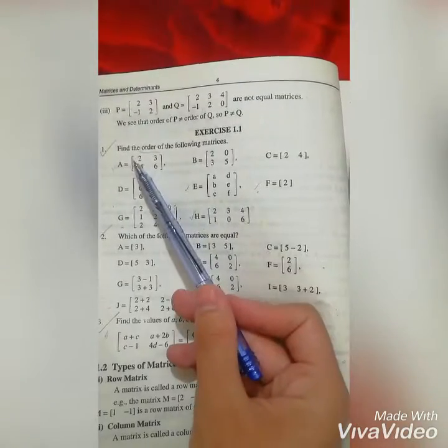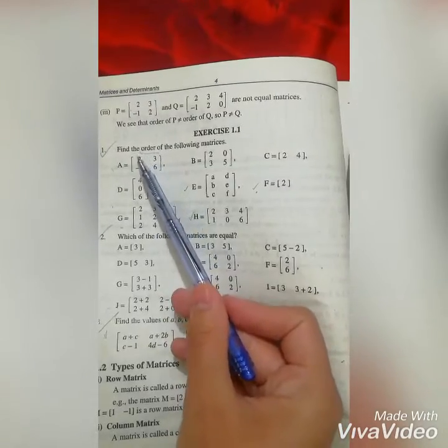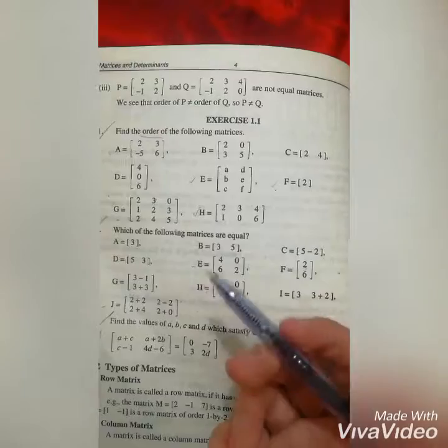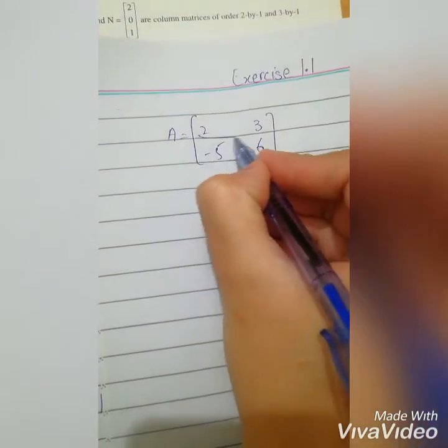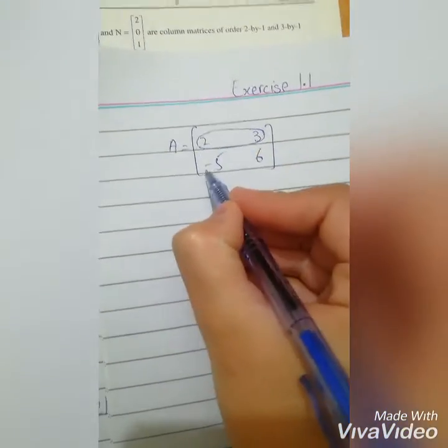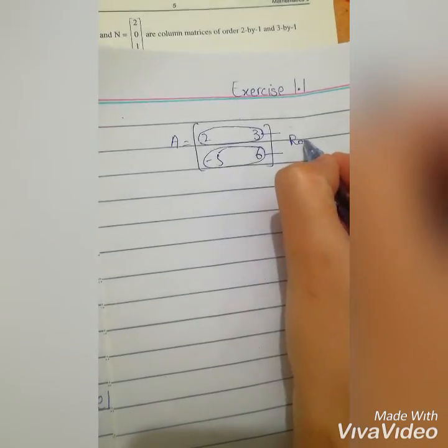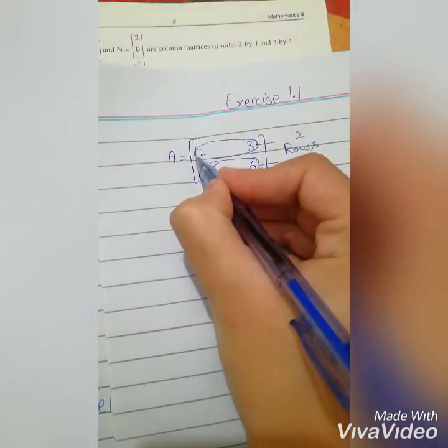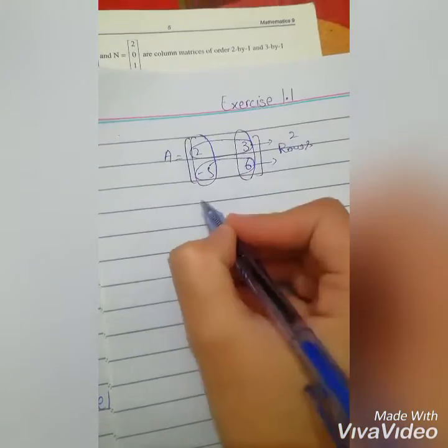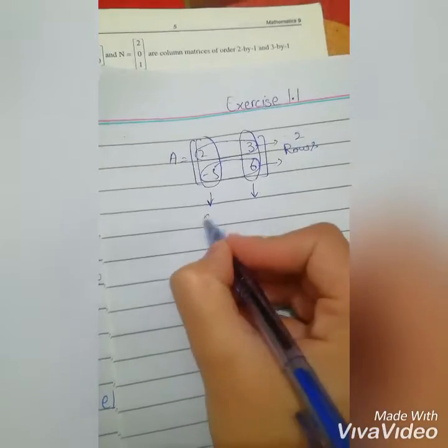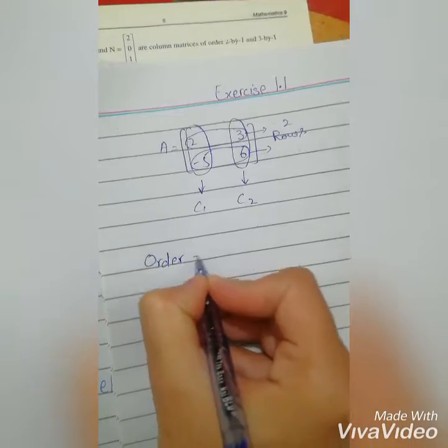We have horizontal rows and vertical columns. For this matrix, how many rows do we have? Two rows. And how many columns? Two columns. So what will the order be called? Order equals 2 by 2.